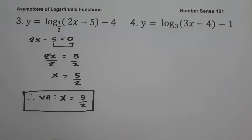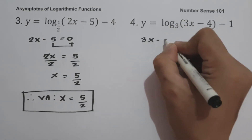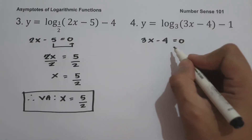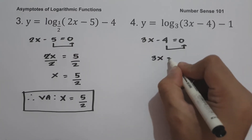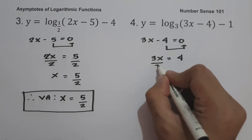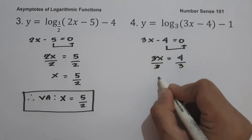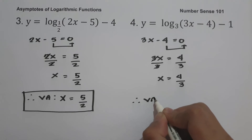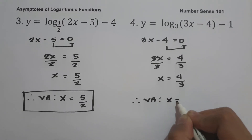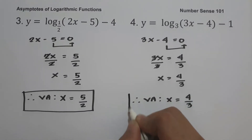On example number four: y equals log base 3 of (3x minus 4), minus 1. To find the vertical asymptote, let us equate the argument equal to zero. So we have 3x minus 4 equal to zero. Moving negative 4 to the other side gives us 3x equals 4. Dividing both sides by 3, we get x equals 4 over 3. Therefore, our vertical asymptote is x equals 4/3, and this will be our answer.